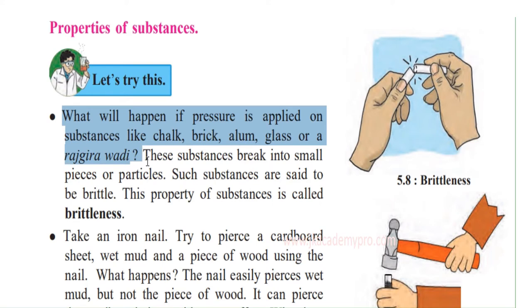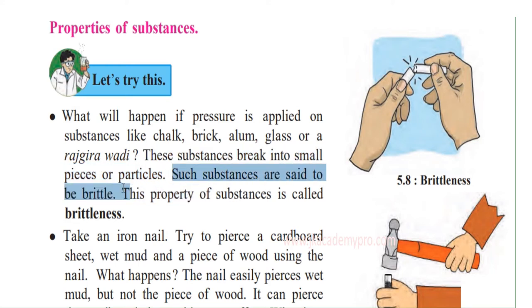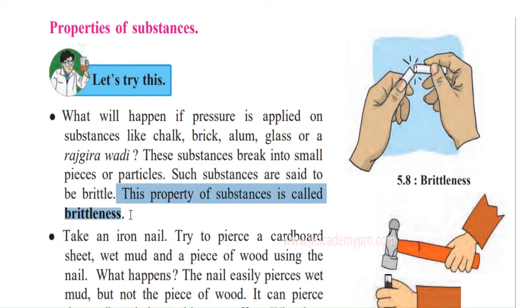If you apply pressure, it's going to break. These substances break into small pieces or particles, just like what you see in the first picture. Such substances are said to be brittle — anything that breaks easily when pressure is applied. This property of a substance is called brittleness.